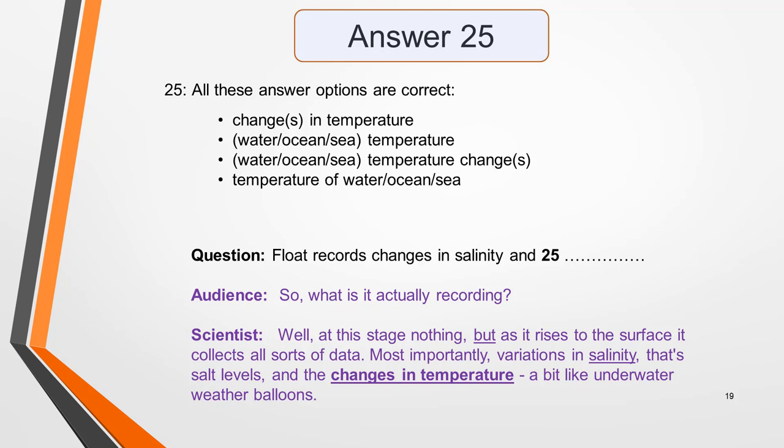This section of text contains a distractor, but, which might have confused you. In answer to the question of what the float is actually recording, the speaker at first says nothing. He then goes on to explain when information is recorded and what that information is. If you were listening out for the keyword salinity or a synonym, which you could guess would come before the answer, you should have been able to identify the answer when it was spoken. This is typical of how examiners try and catch you out with distractors, so beware.